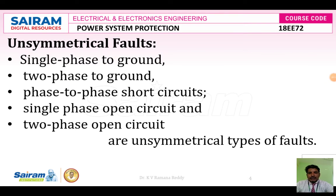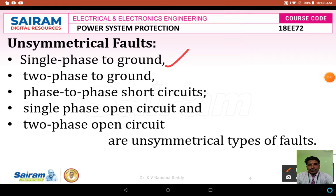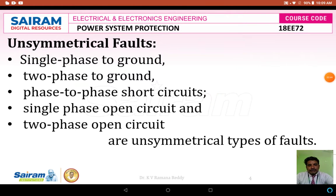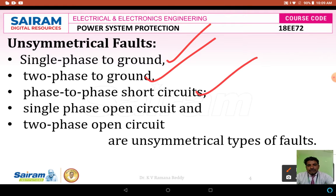Next, unsymmetrical faults. Unsymmetrical faults are again classified into various types. They are: single-phase to ground fault, two-phase to ground fault, phase-to-phase short circuit fault, single-phase open circuit fault, and two-phase open circuit fault. These five types of faults are called unsymmetrical faults. Therefore, unsymmetrical faults are generally classified as five types.